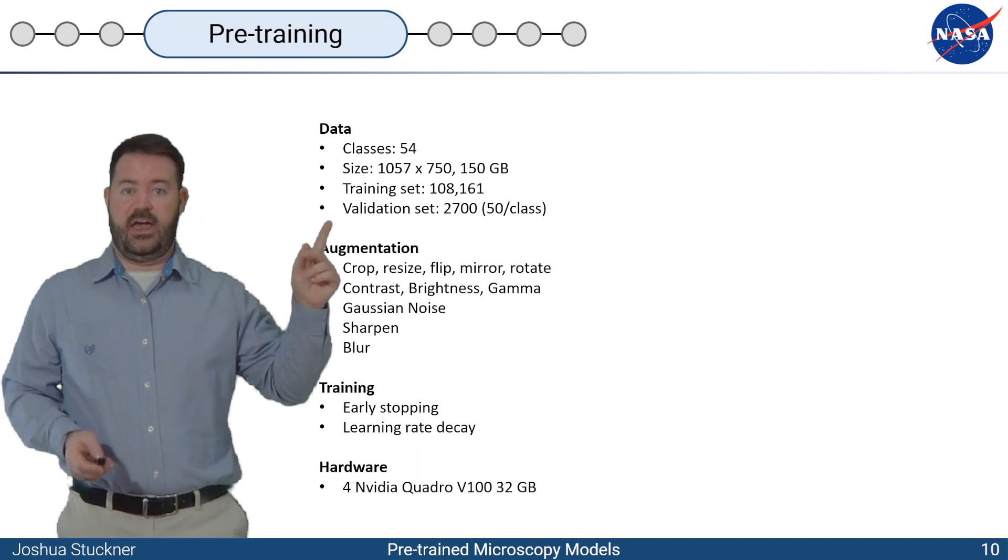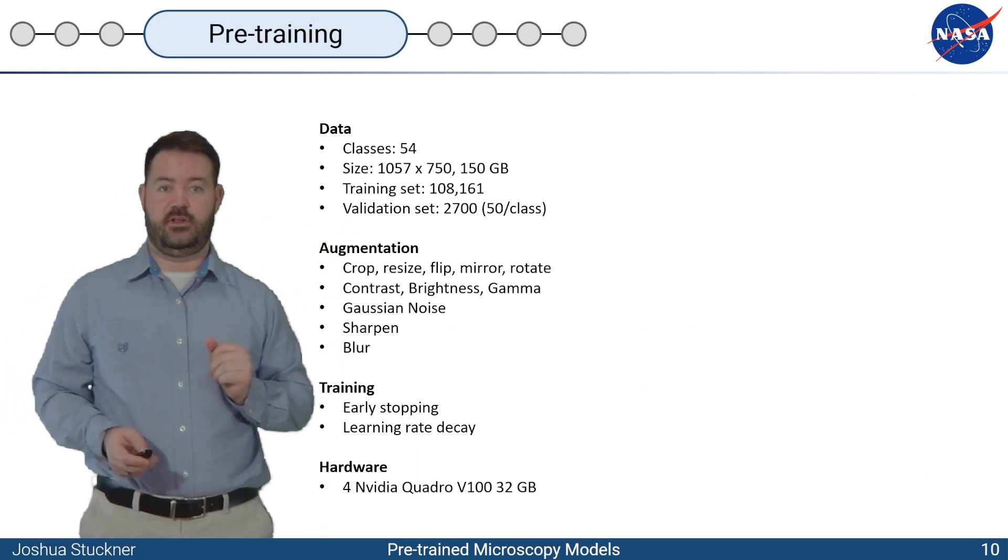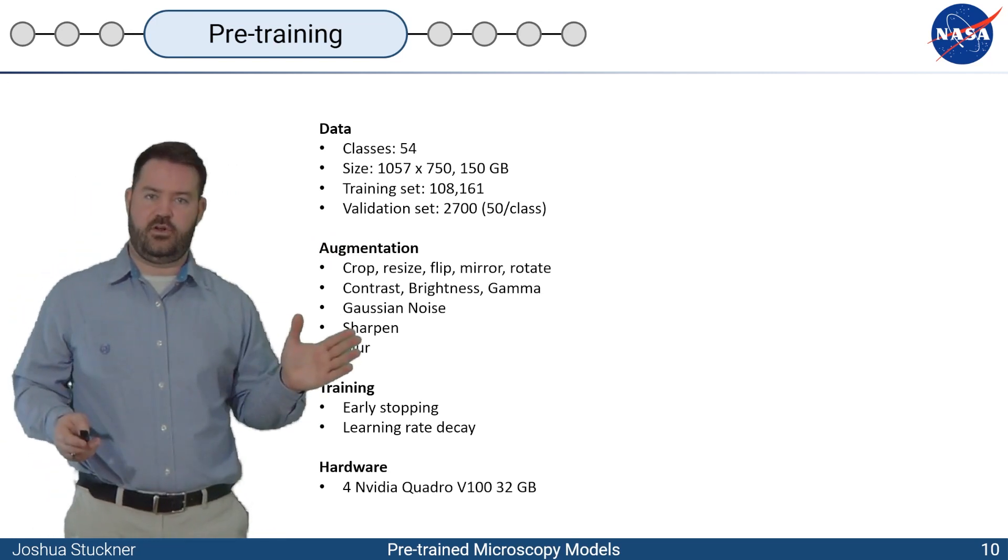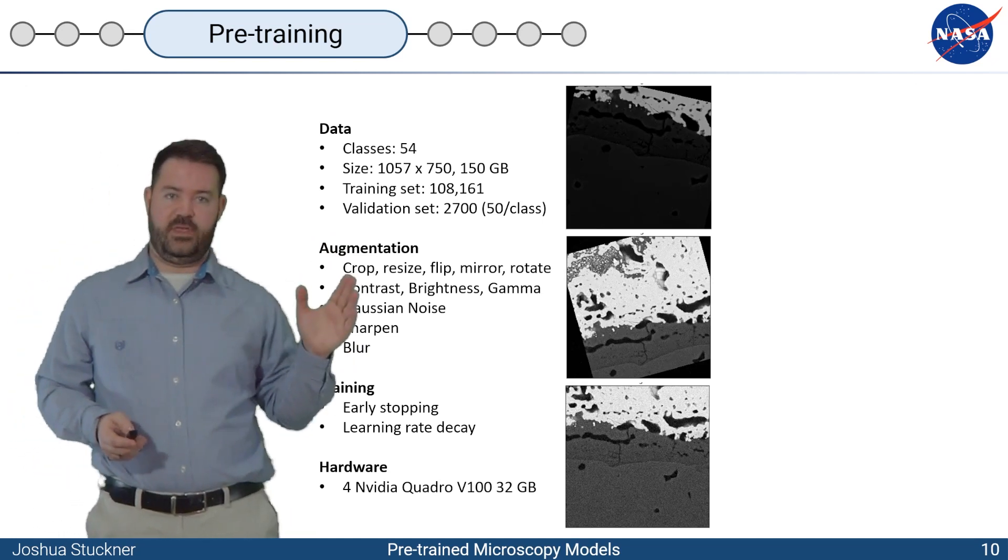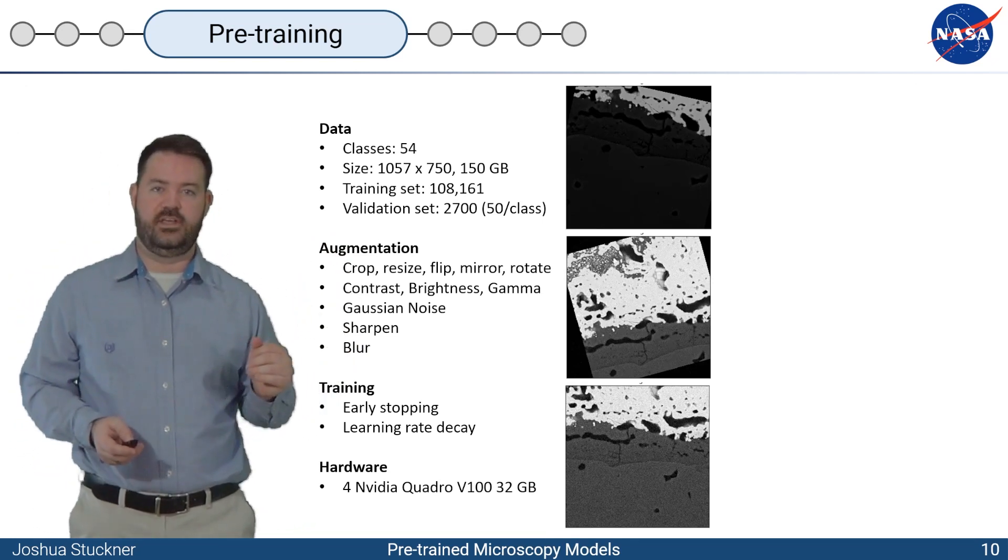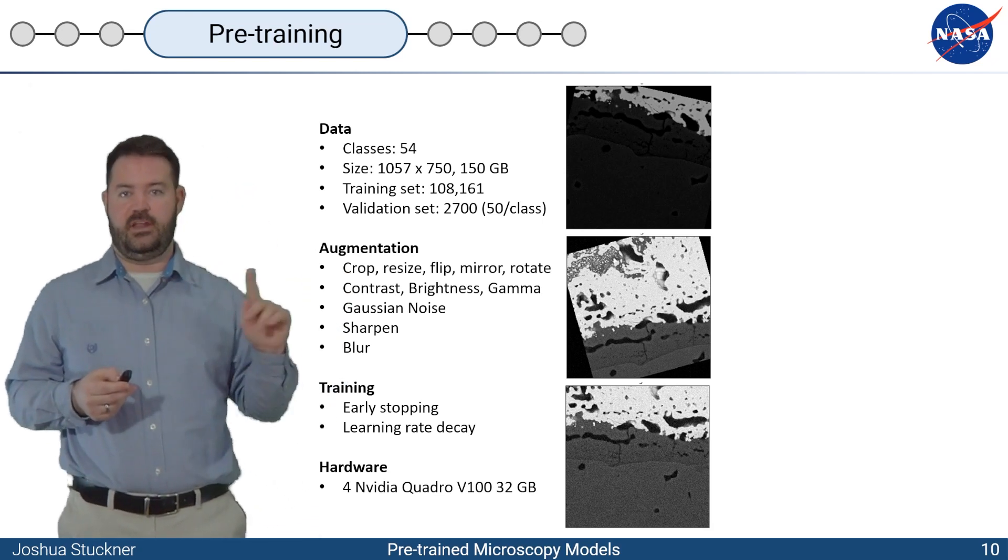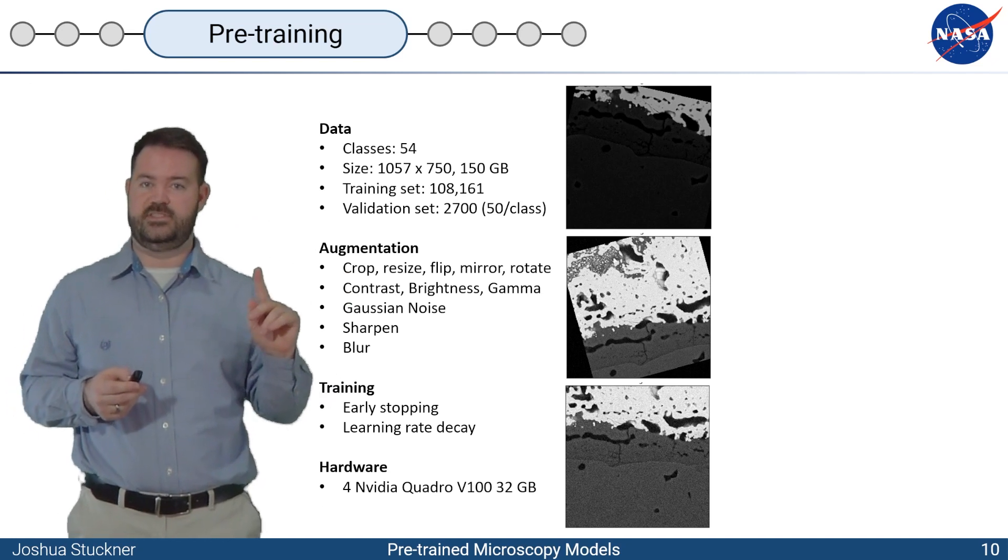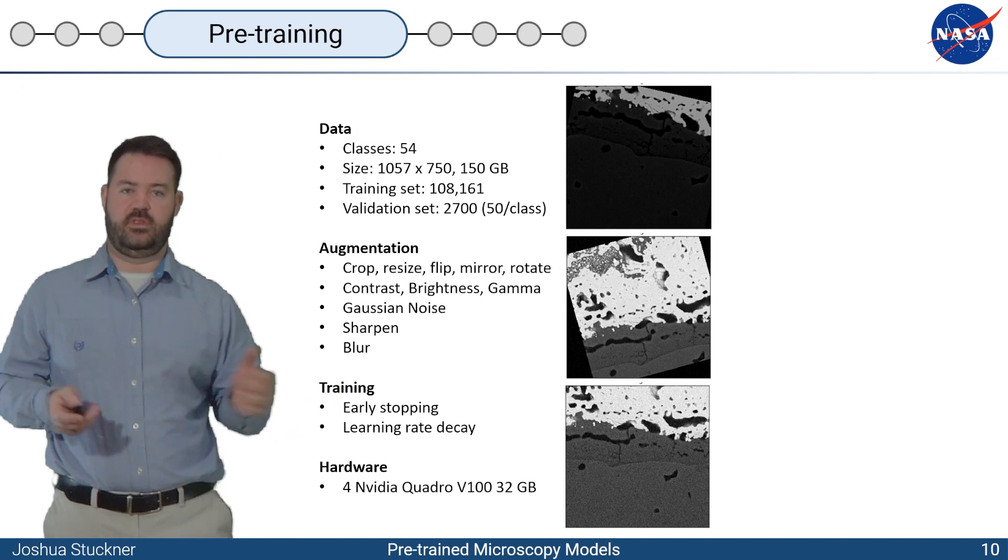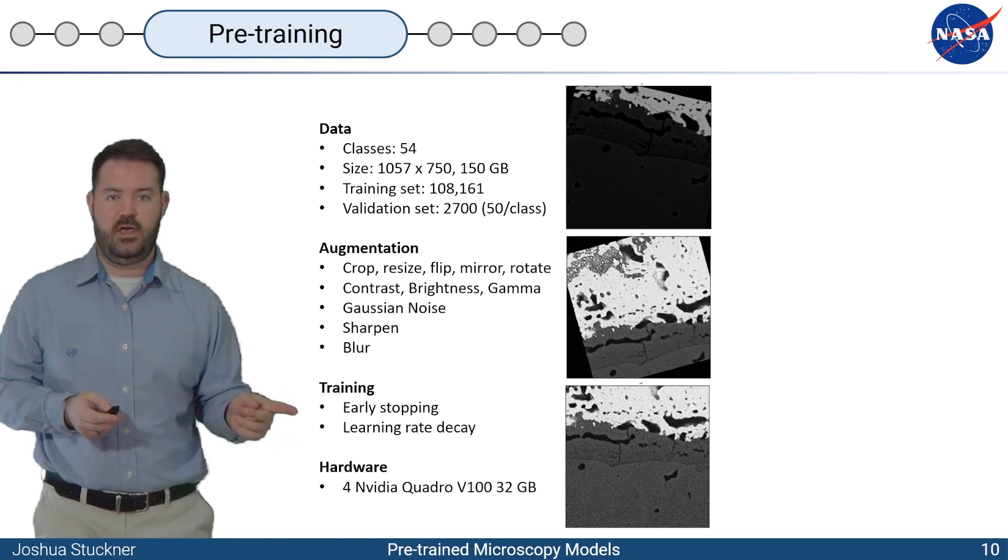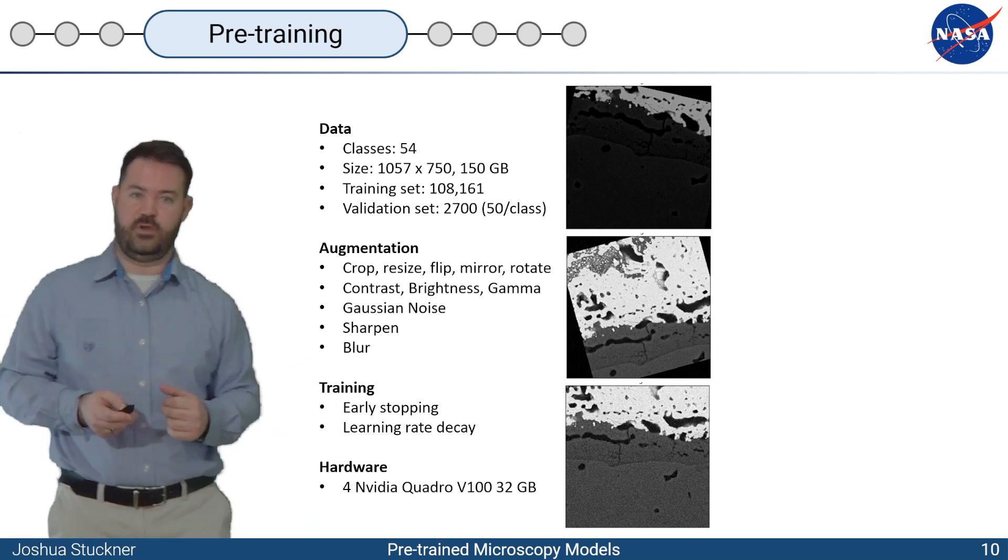Our training set, Micronet, had 54 classes, 100,000 images. Our validation set had 2,700 images, 50 per class. We use pretty standard augmentation, which ImageNet is trained on, like flipping, resizing, random contrast, Gaussian noise. One difference between ImageNet and the way we did augmentation was we did vertical flipping. Typically they don't do that in ImageNet because you don't really see upside down cats that often. But in microscopy, they can be flipped upside down and it doesn't really matter.